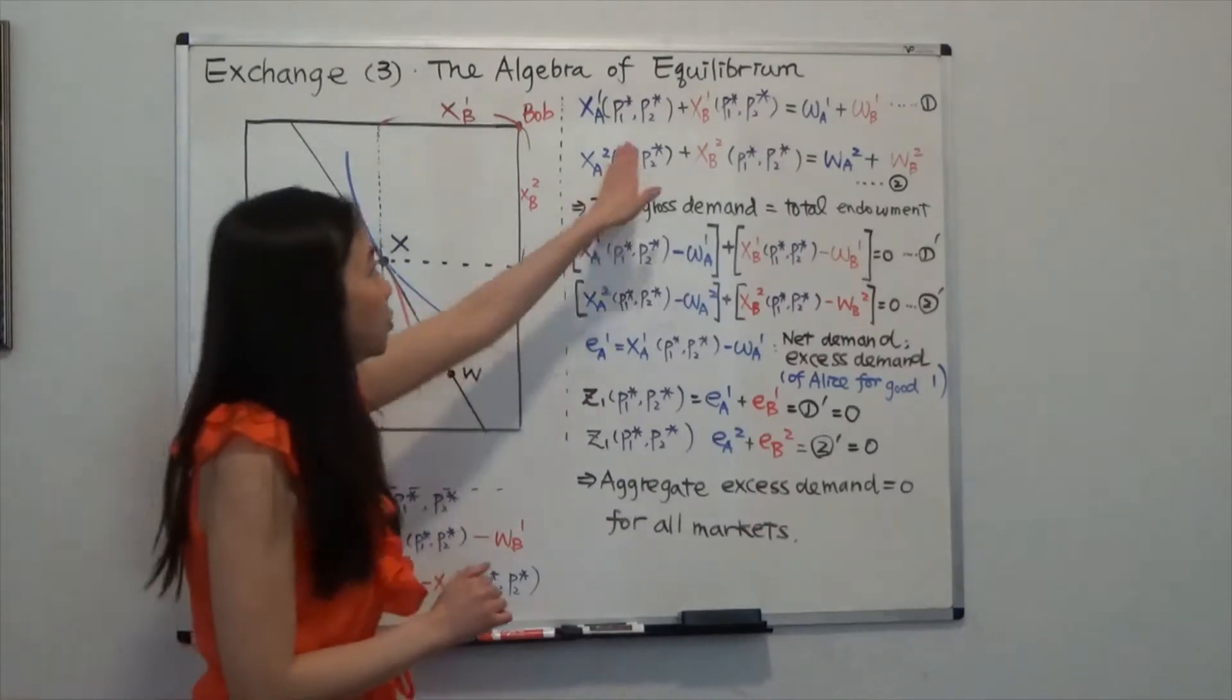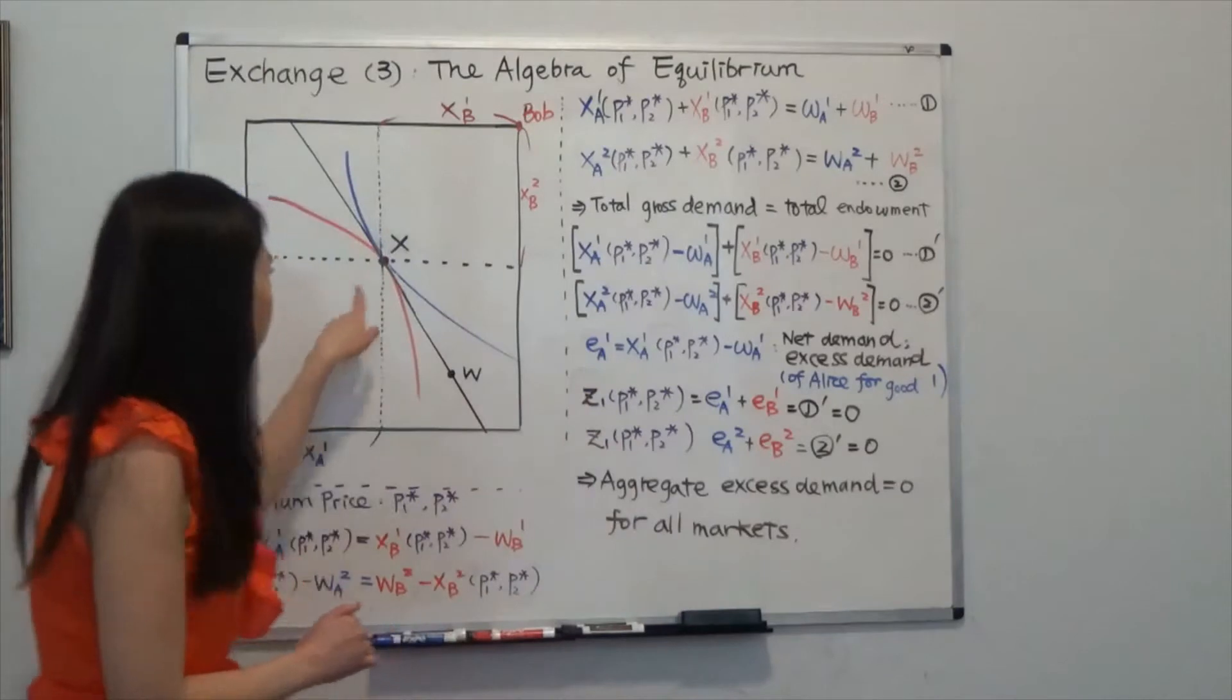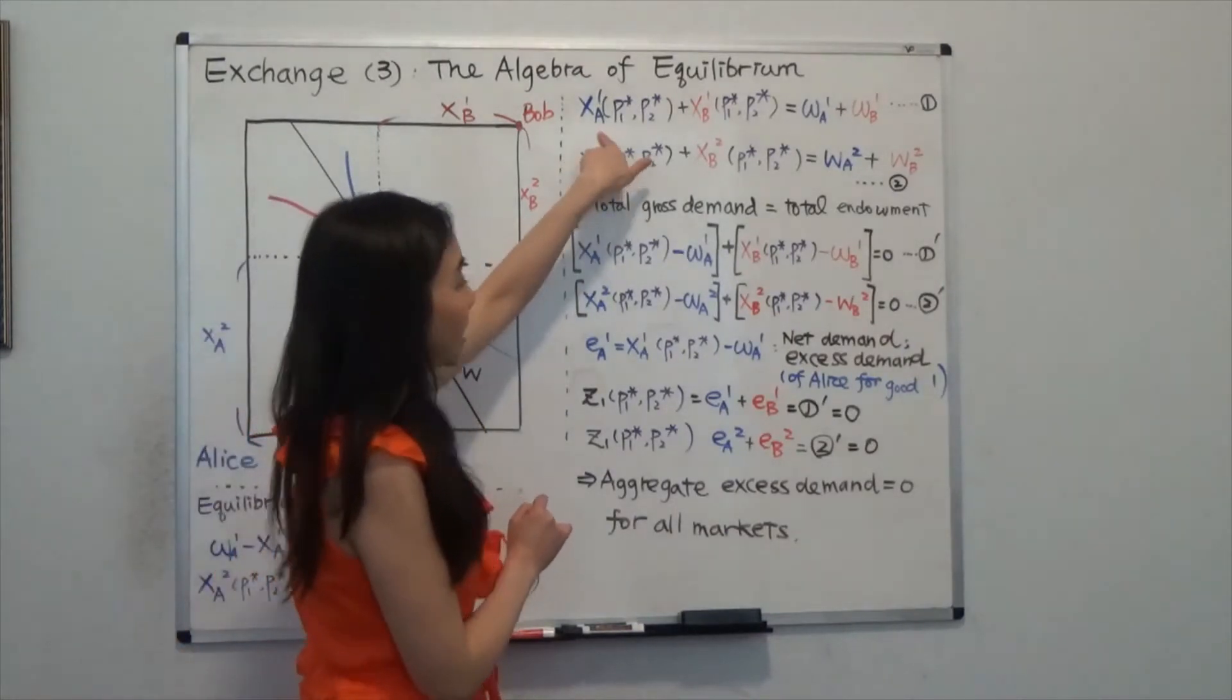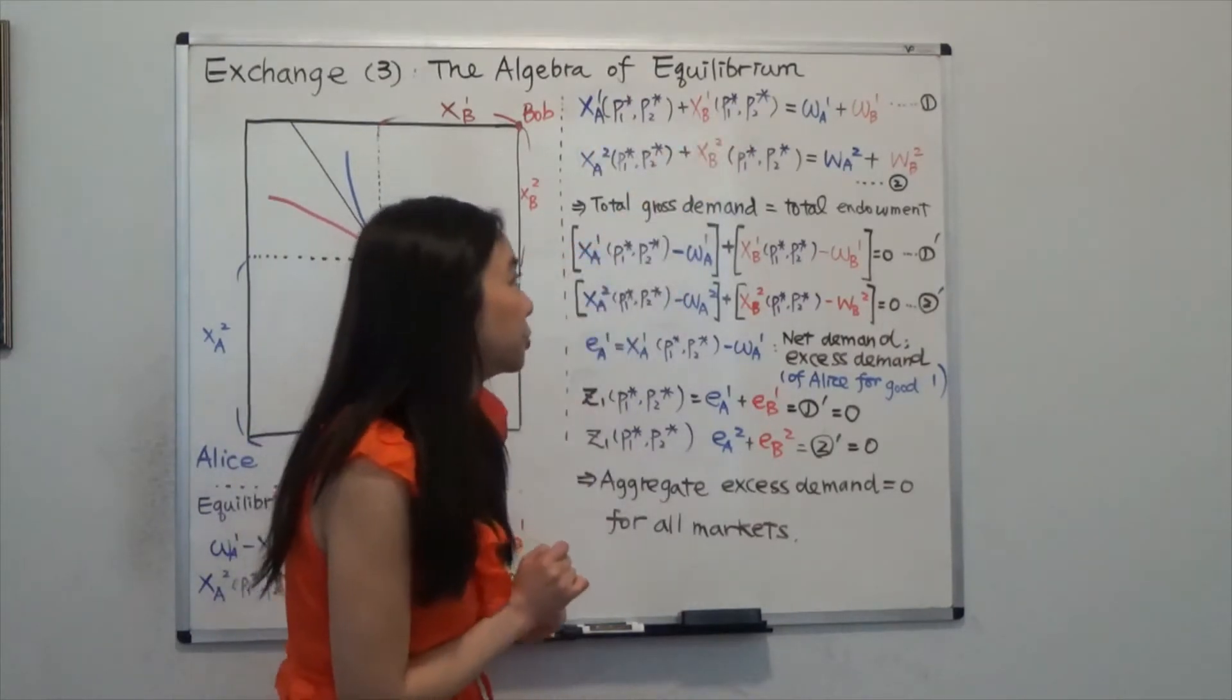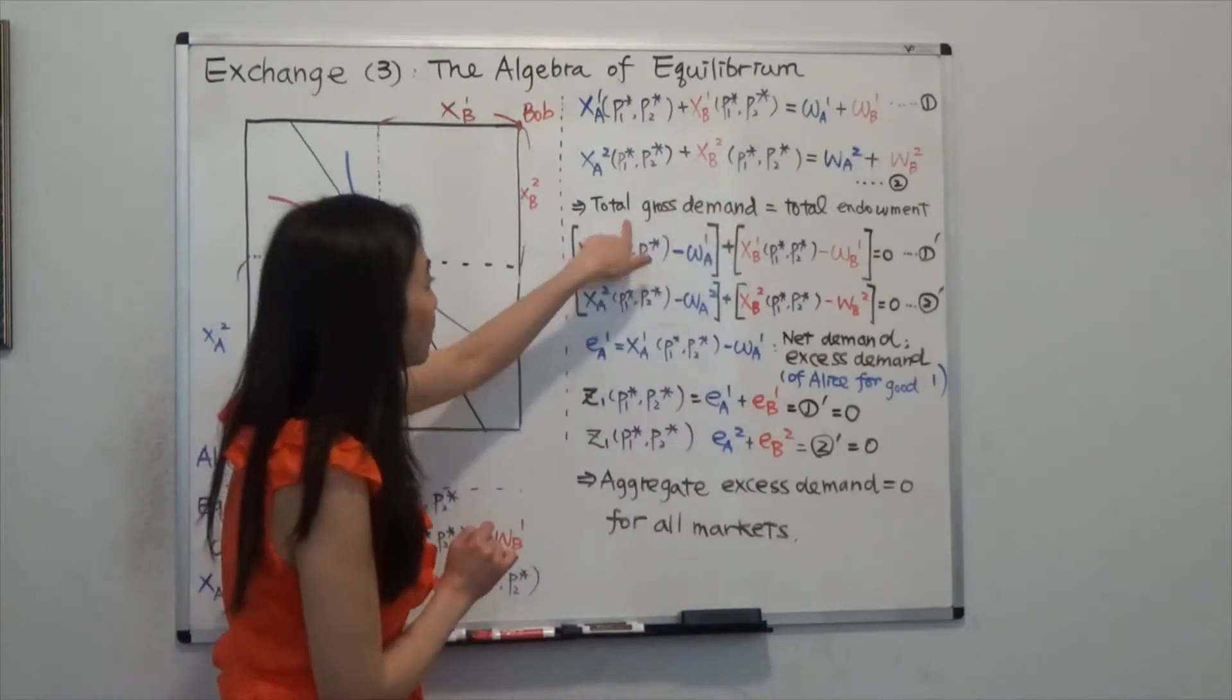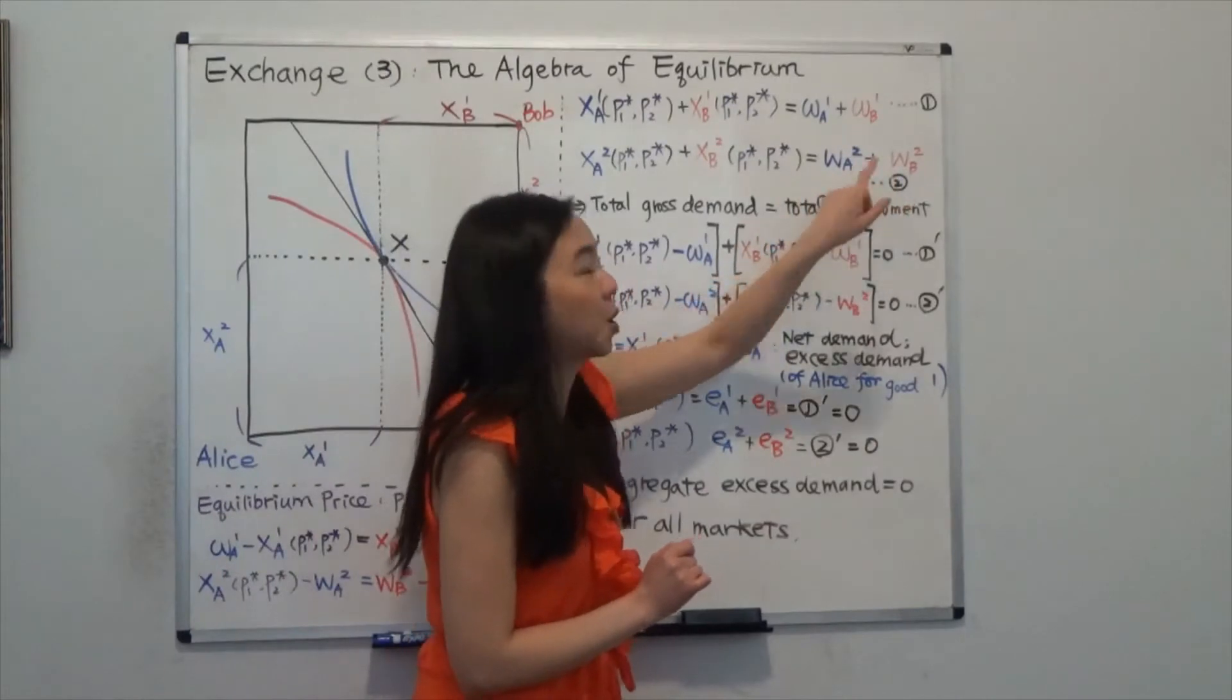And we can take a look at the algebra under this equilibrium. So you can see in equation one, equation one just tells you that for this consumption bundle X to work, it must be feasible. So what does it mean by feasible? That means the gross demand of Alice for good one plus the gross demand of Bob for good one must be equal to the sum of the endowment of both Alice and Bob for good one. And same for good two, the total gross demand of good two from Alice and Bob summing them up must be equal to the sum of their initial endowment in good two.